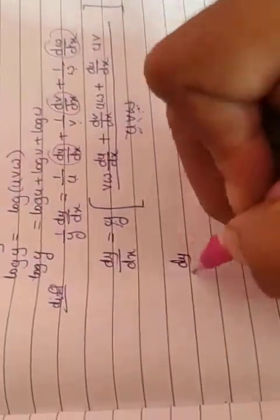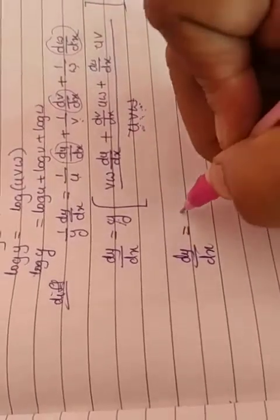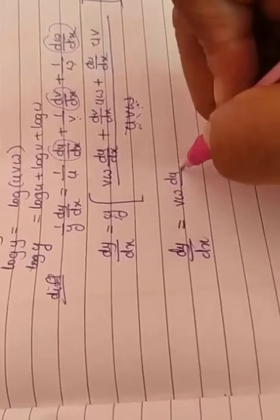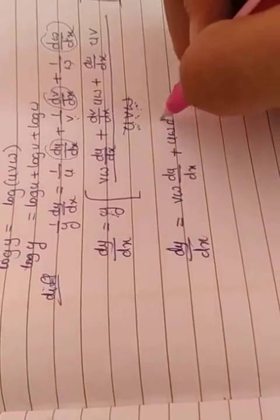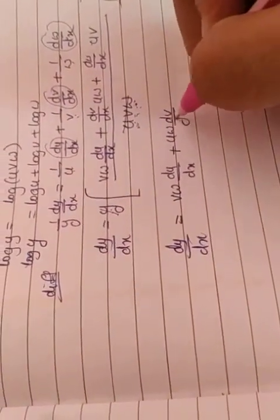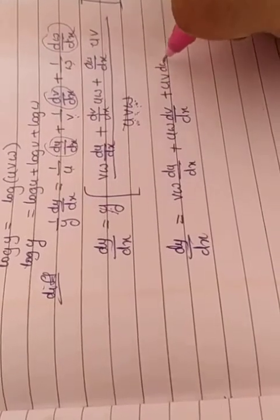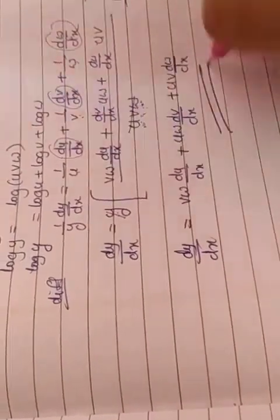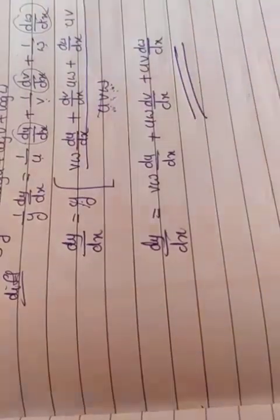So dy/dx equals: vw · du/dx + uw · dv/dx + uv · dw/dx. We got the same answer as the first method.